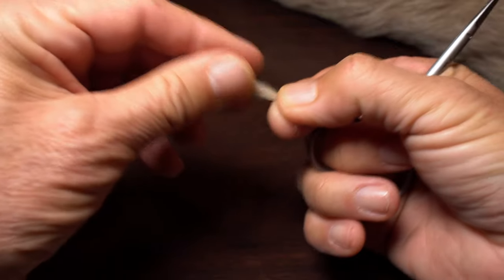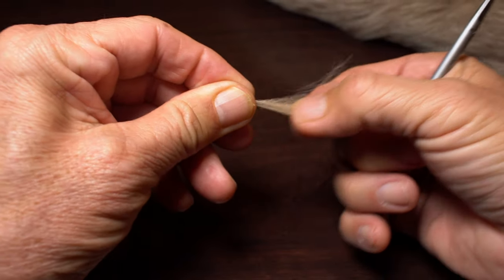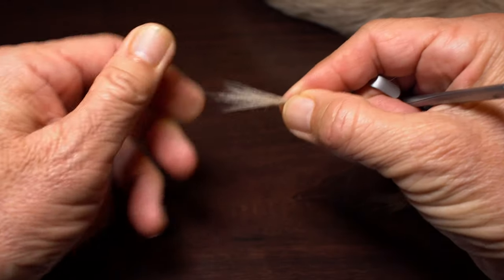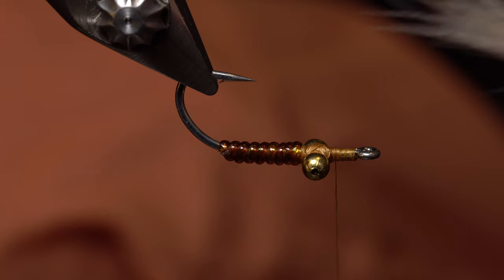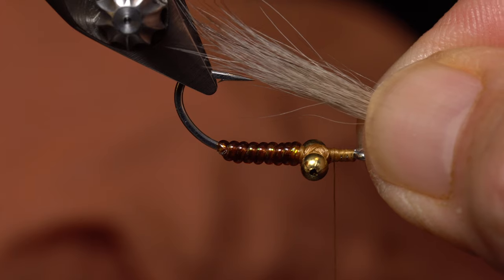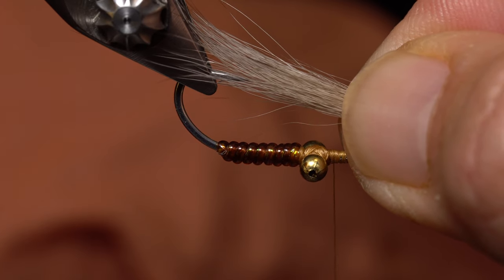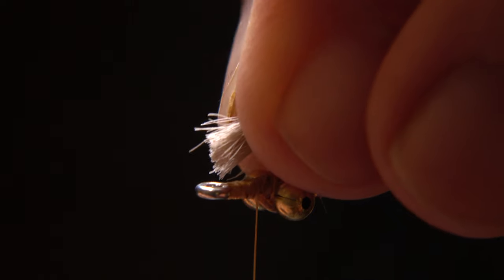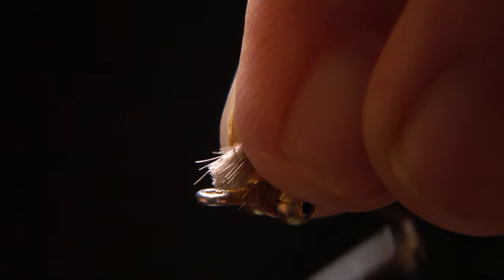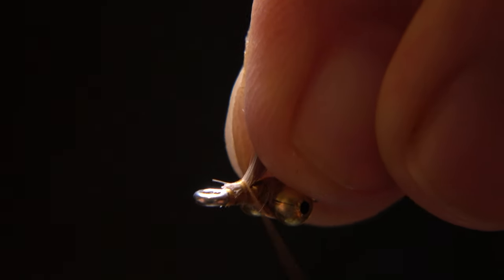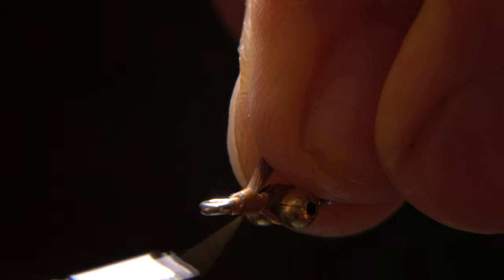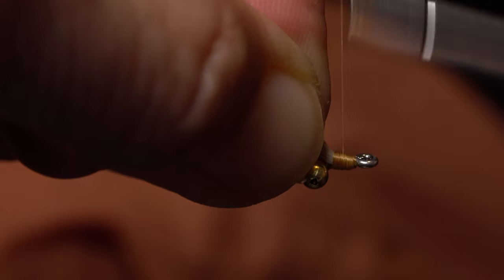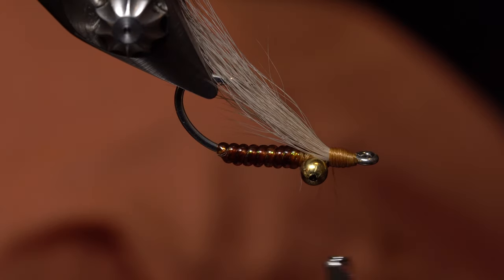Snip a small clump free from the hide, and then pull out the shorter underfur, leaving a bundle of roughly aligned guard hairs. Measure to form a wing that extends a little ways past the hook bend, and then snip the excess butt ends off close. Lay those butt ends on what is now the top of the hook shank, behind the hook eye, and take nice firm thread wraps to secure them. Continue taking wraps until the butt ends are completely covered, and you've built up a nice little head on the fly.